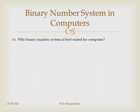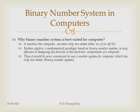Why is the binary number system best suited for computers? There are precisely two reasons: an electrical reason and a mathematical reason. Every electrical circuit has two states — on or off, or either 1 or 0 — which is why we use binary in computers. Another fundamental reason is Boolean algebra, a mathematical paradigm based on the binary number system. It is very efficient in designing formulas for electronic components of a computer.